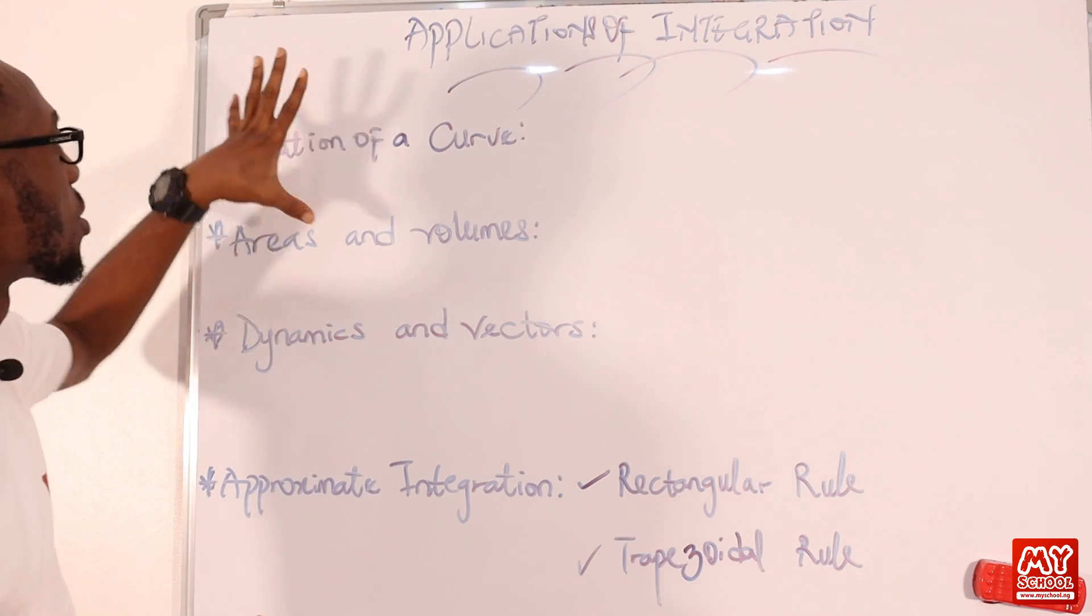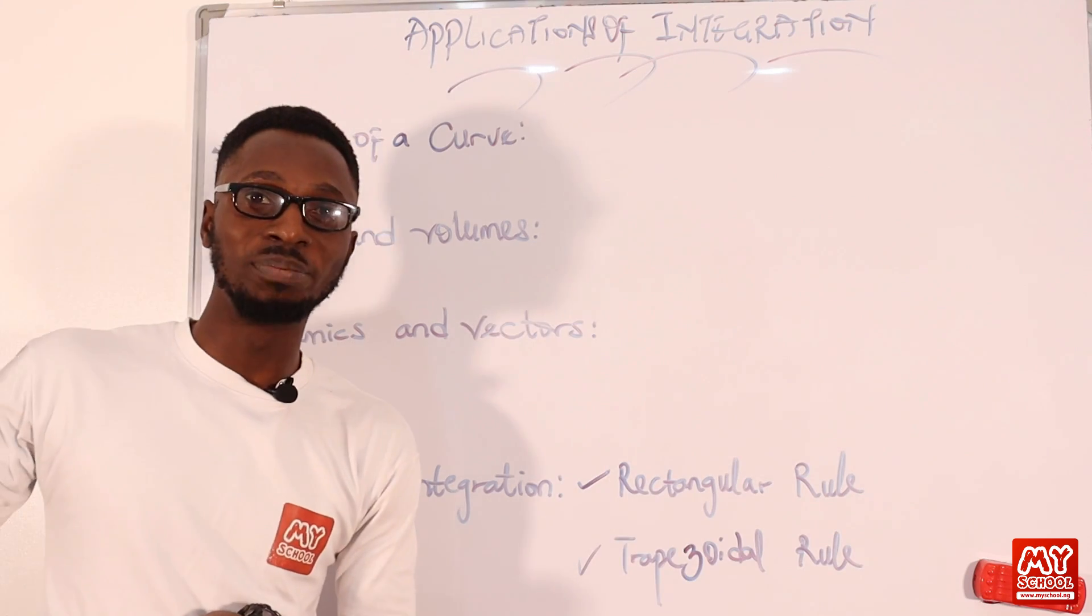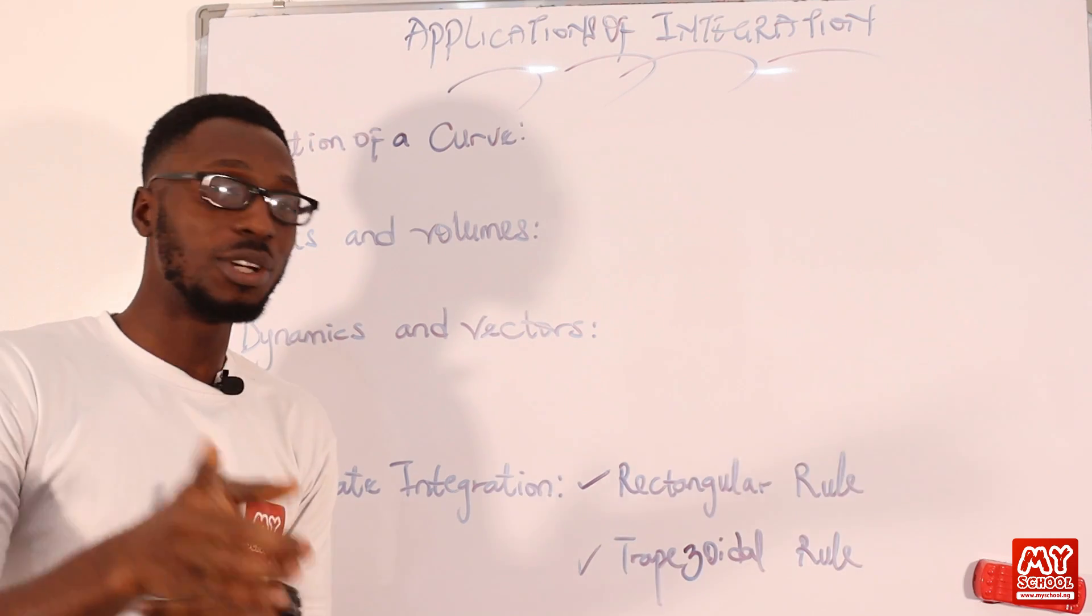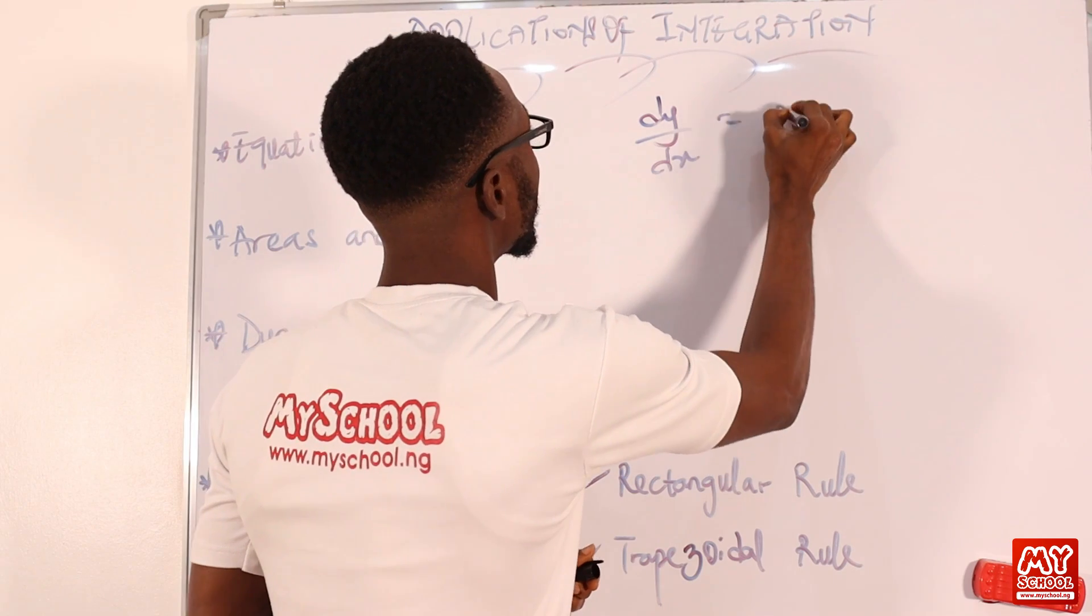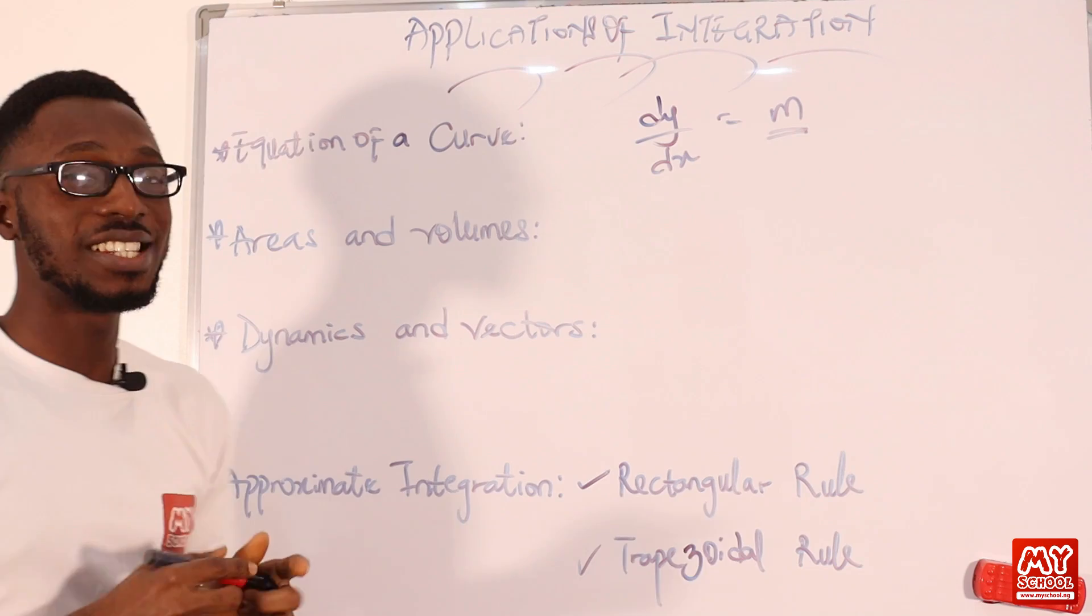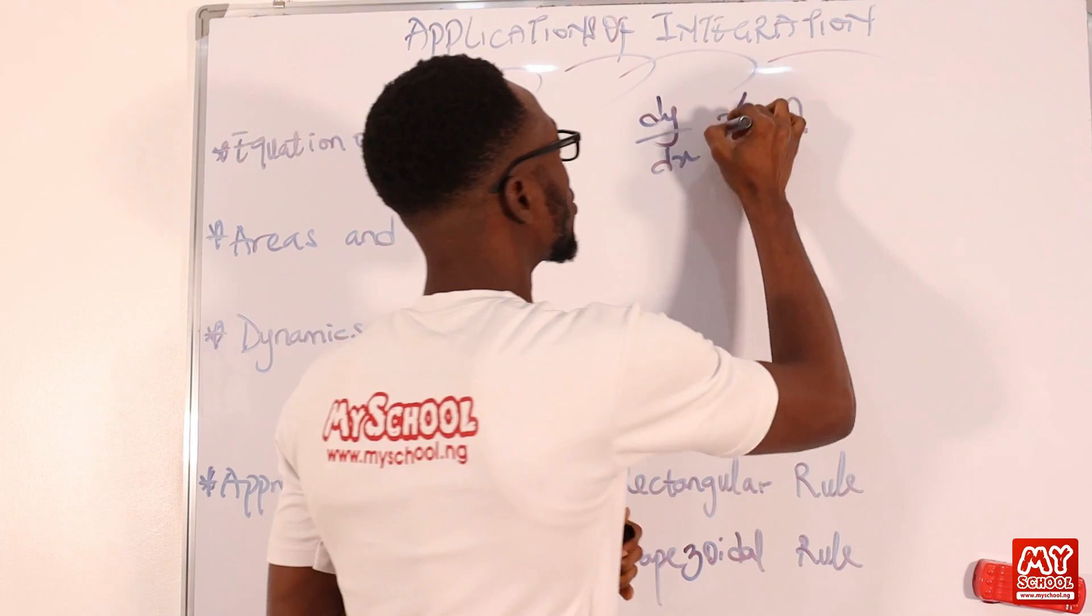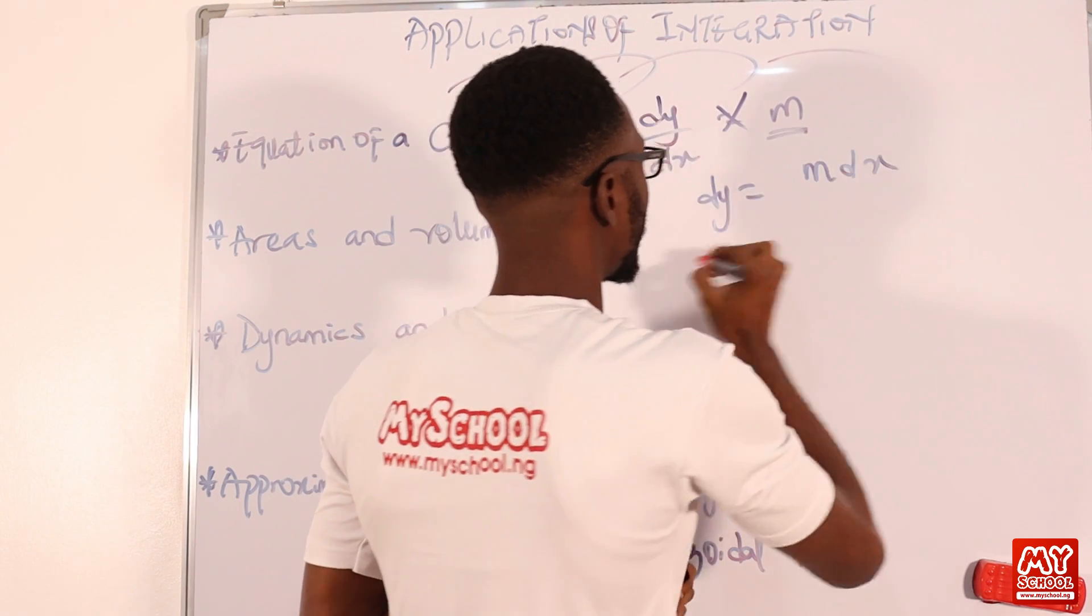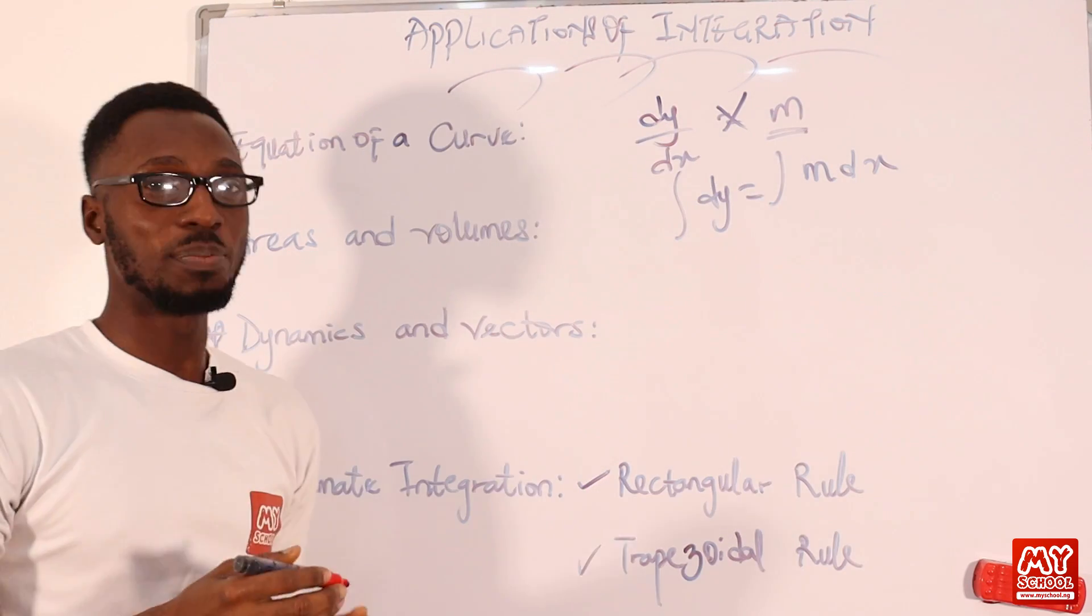Let's start off with equation of a curve. Just like what we did regarding the tangent and normals, you have to carry out integration. You recall that your dy dx gives you your gradient, and this is actually same as your tangent. So once you do this for integration, you have dy dx equals to m dx. We go ahead and integrate, then we have your m c.